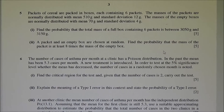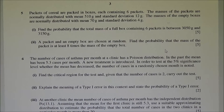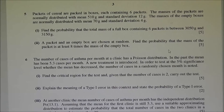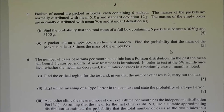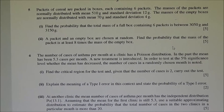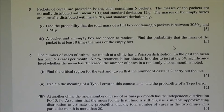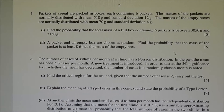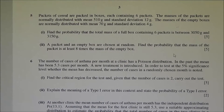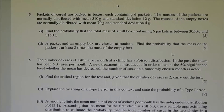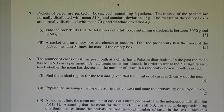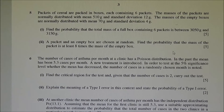Question number 5. Packets of cereal are packed in boxes, each containing 6 packets. The masses of the packets are normally distributed with mean 510 grams and standard deviation 12 grams. The masses of the empty boxes are normally distributed with mean 70 grams and standard deviation 4 grams.